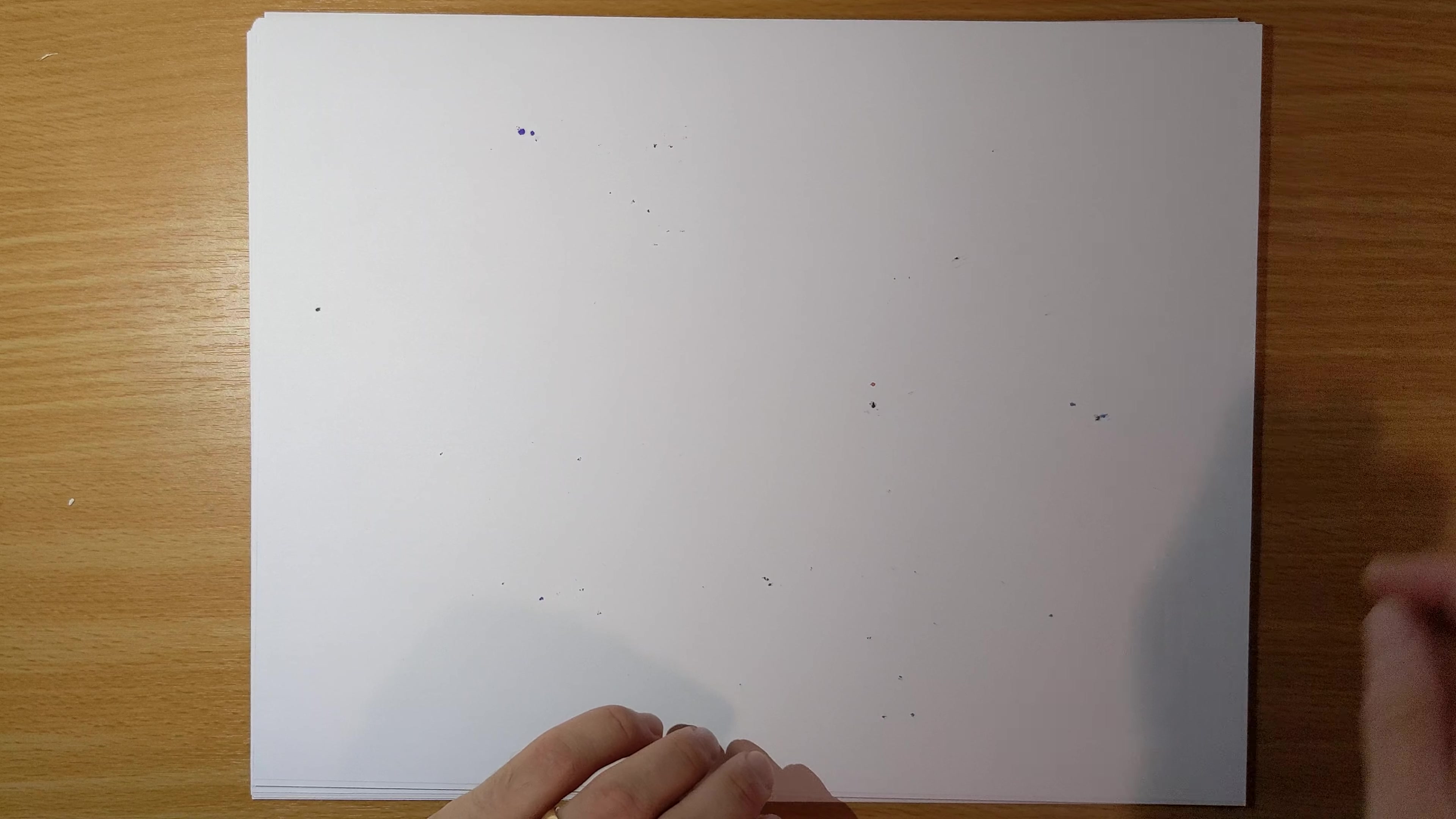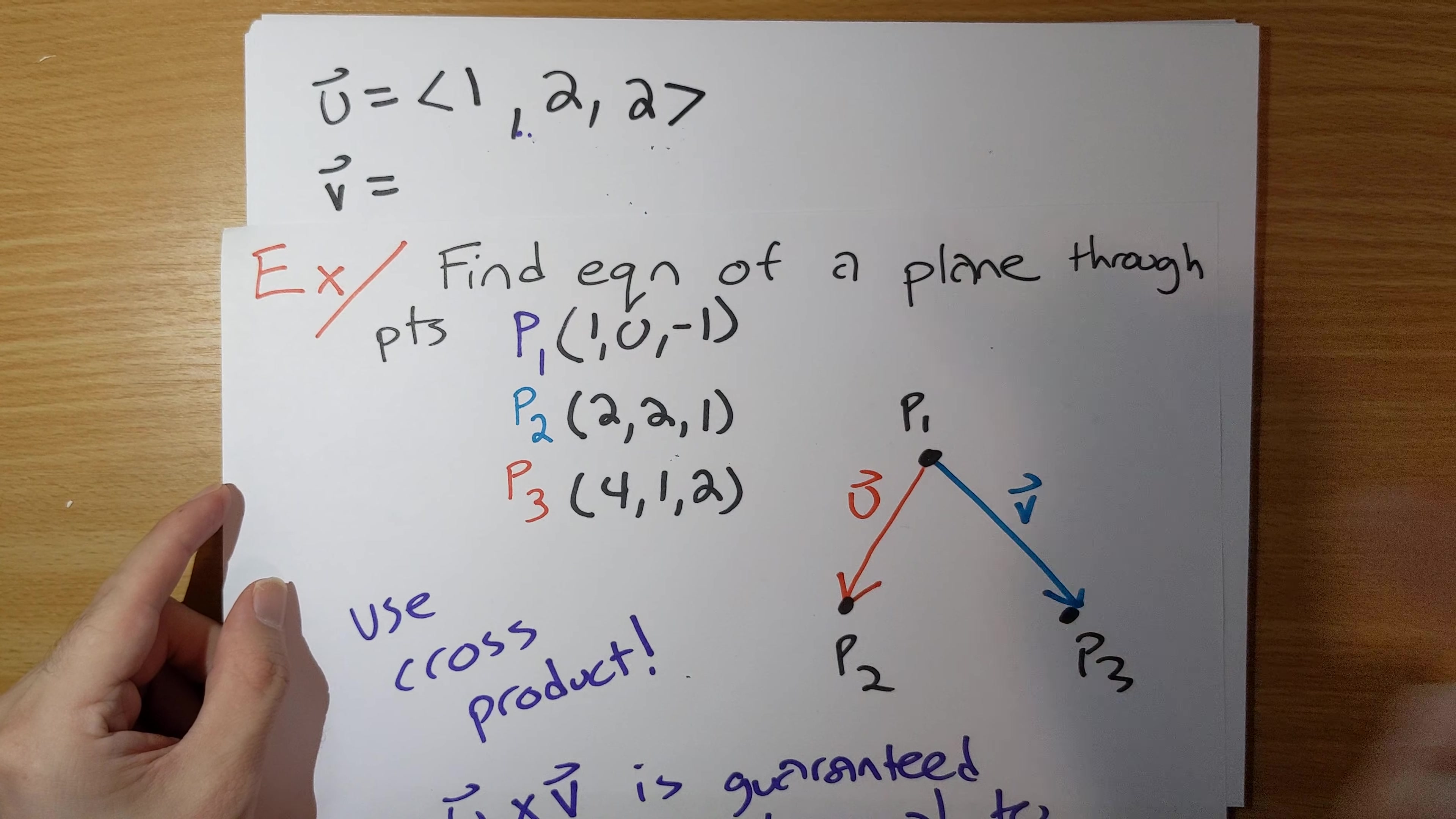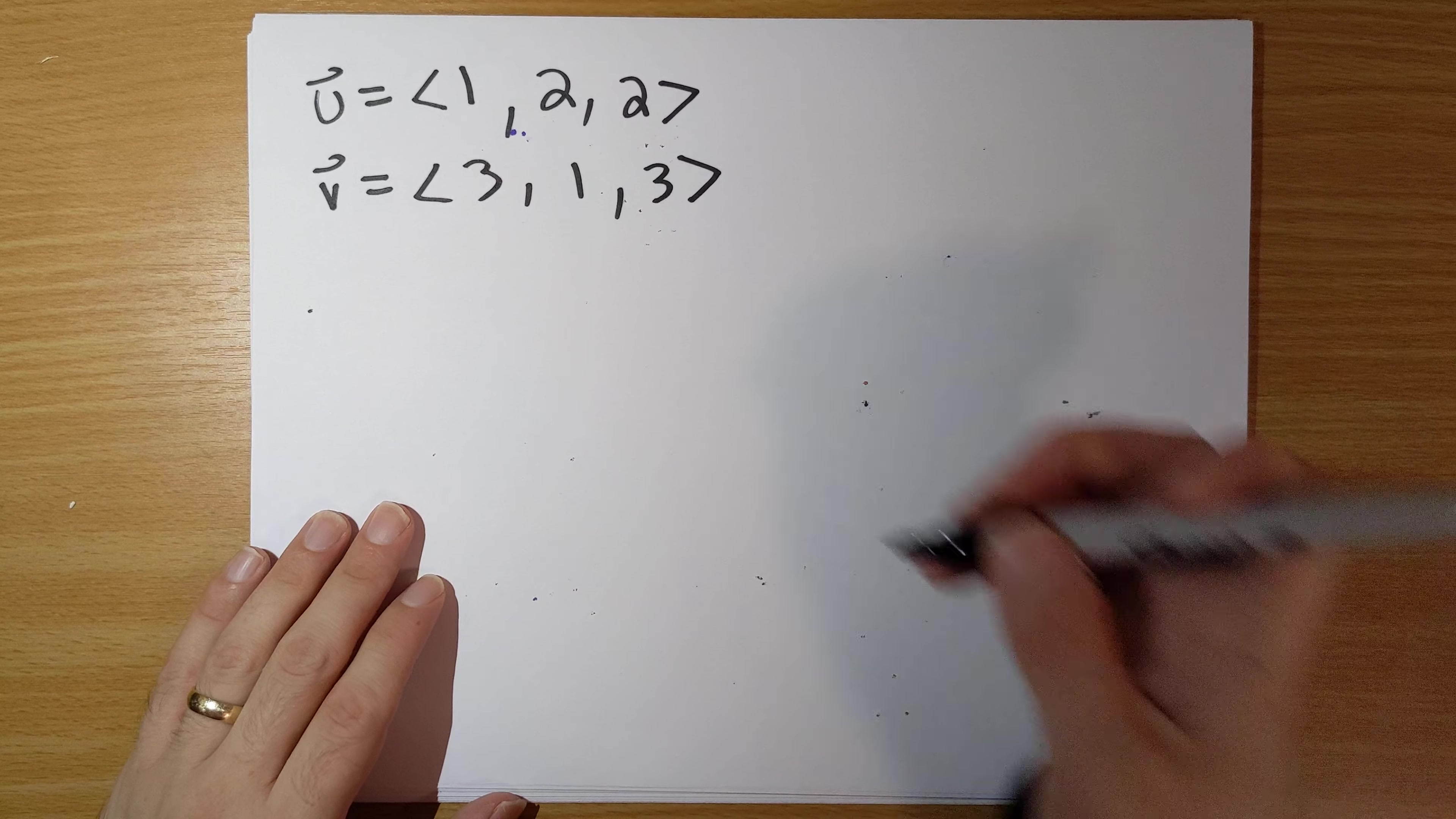But let's go ahead and just use this. So, U is going to be, let's see here, 2 minus 1 is 1, 2 minus 0 is 2, 1 minus minus 1 is 2. And V is going to be, so it's P3 minus P1. The entries are going to be, 4 minus 1 is 3, 1 minus 0 is 1, and 2 minus negative 1 is going to be 3. So, we have U is (1,2,2) and V is (3,1,3).